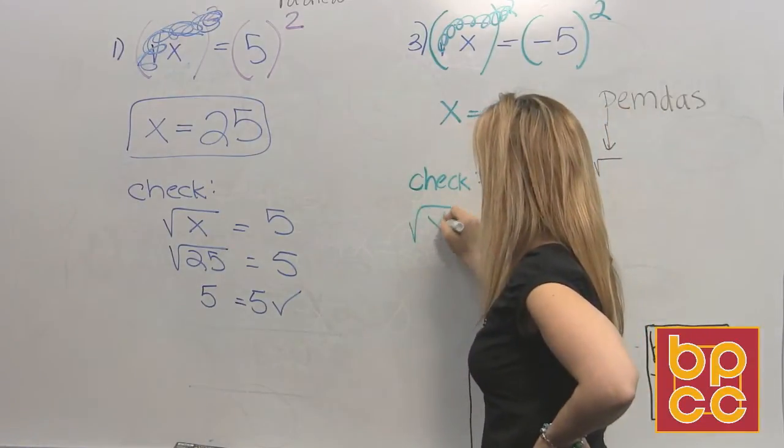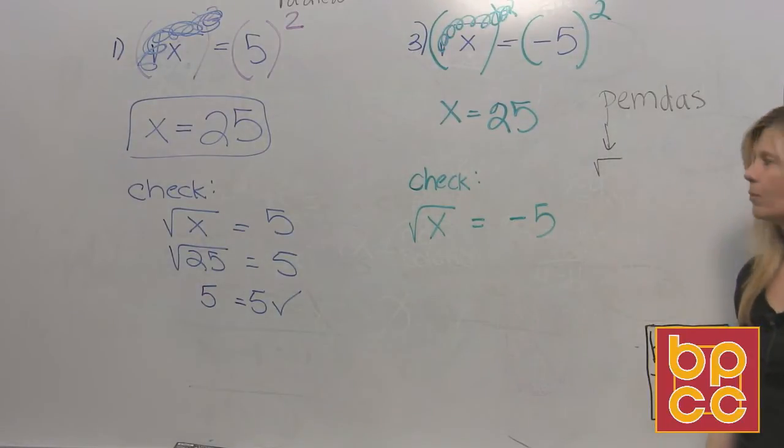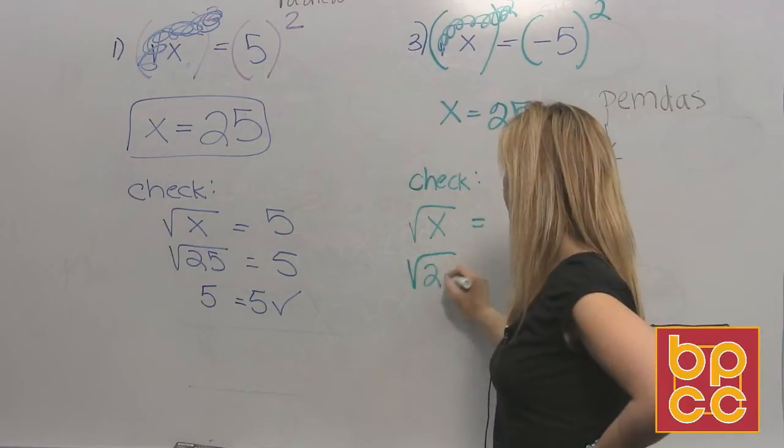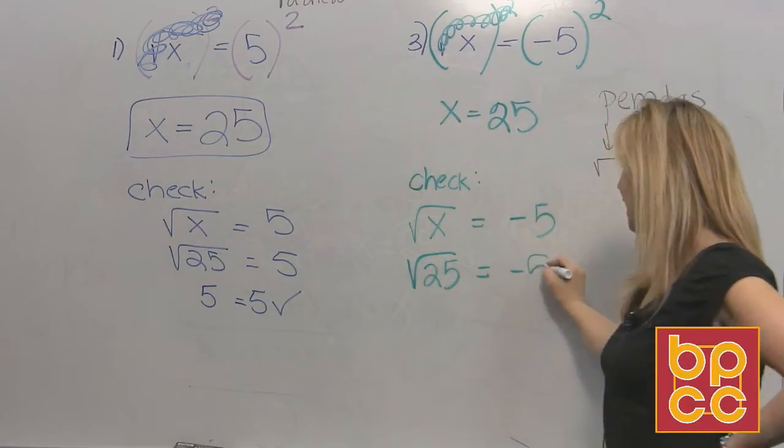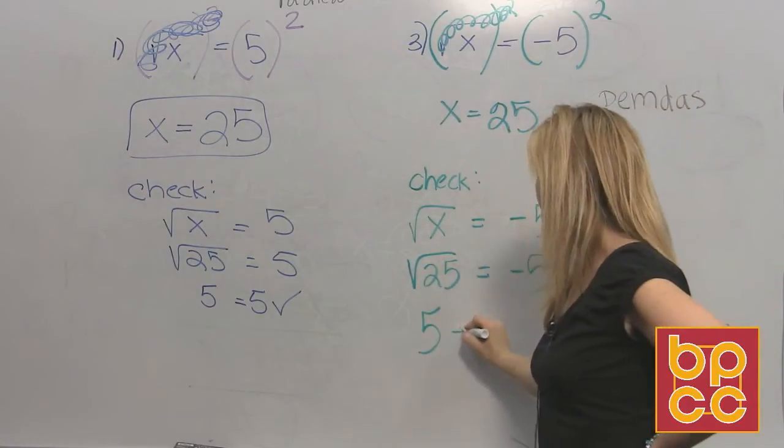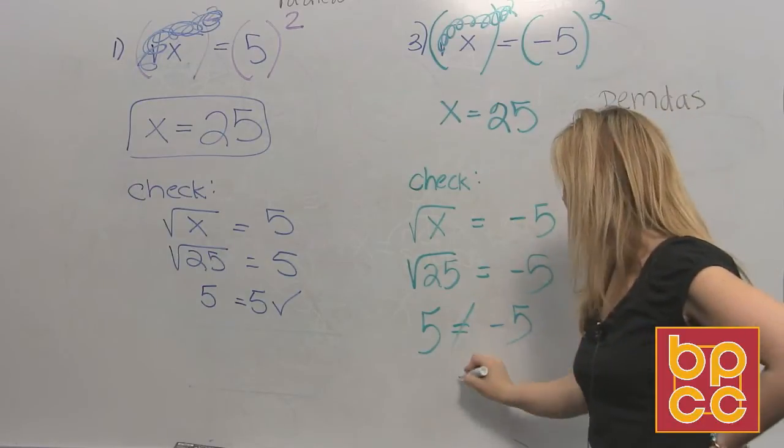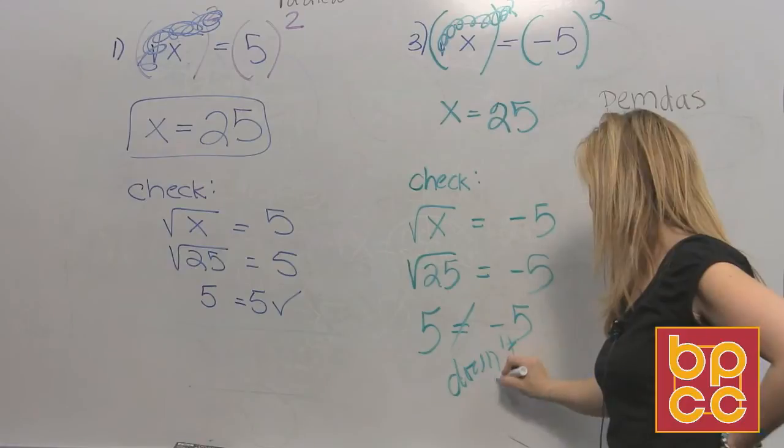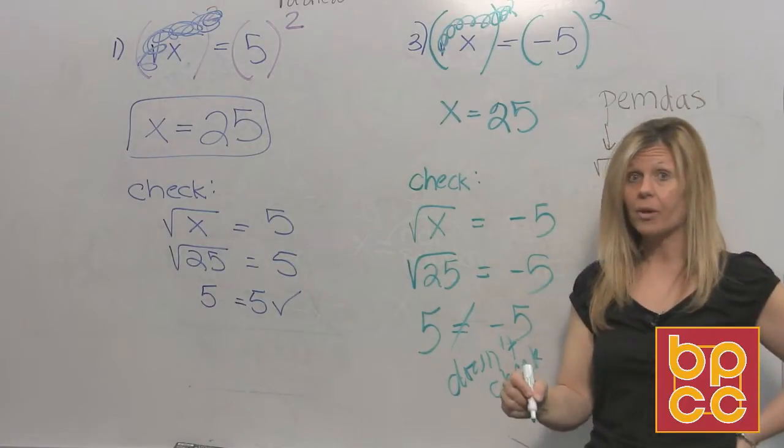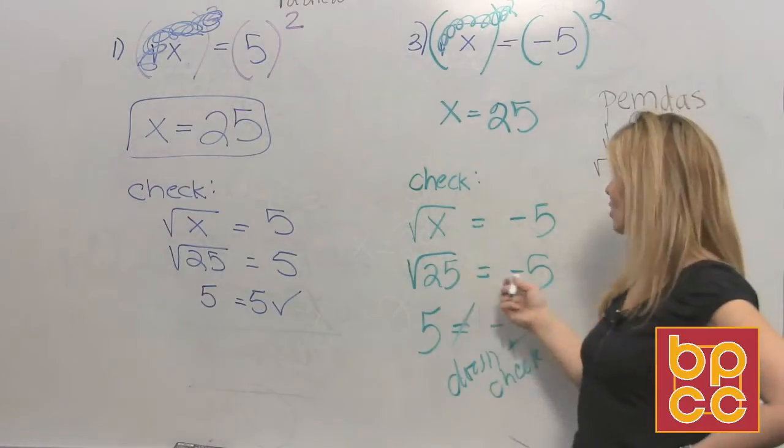You always check by writing the original. That's the original equation I gave you. I'm going to replace, substitute for X, 25. Everything else stays the same. I'm going to work this. I know the square root of 25 is 5. Does 5 equal negative 5? No. It does not check. And I'm warning y'all, we're in college math. Just because you get an answer doesn't mean it's correct until you check it.